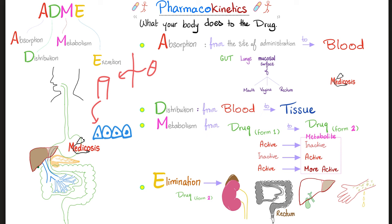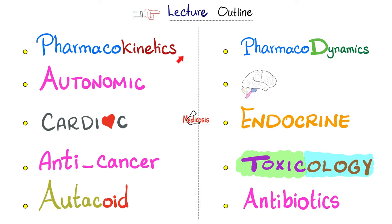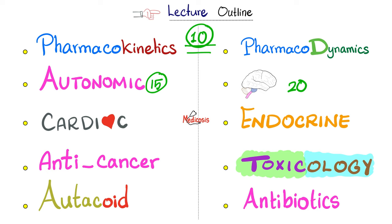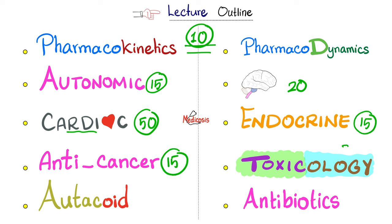This is pharmacokinetics. Throughout the rest of this pharmacology playlist, we will talk in great detail about each of these topics. Pharmacokinetics and pharmacodynamics — general pharmacology — is covered in 10 videos. Autonomic pharmacology: 15 videos. Neuropharmacology: 20 videos. Cardiac pharmacology including diuretics: 50 videos. Endocrine pharmacology: 15 videos. Chemotherapy: 15 videos. Toxicology: 25 videos. Autacoids: 20 videos. And antibiotics — not just antibacterials, but antivirals, antifungals, and antiparasitics — 40 videos.